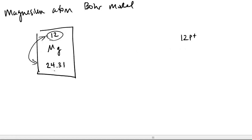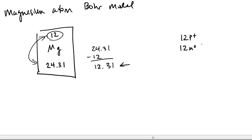I'm going to draw in 12 protons — that number comes right from the atomic number. Then I look at the difference between the two numbers: 24.31 minus 12 is 12.31, so that tells me my number of neutrons on average. Most magnesium atoms will have 12 neutrons. As it happens, magnesium typically has the same number of neutrons as protons. An atom, of course, is when the number of protons equals the number of electrons.